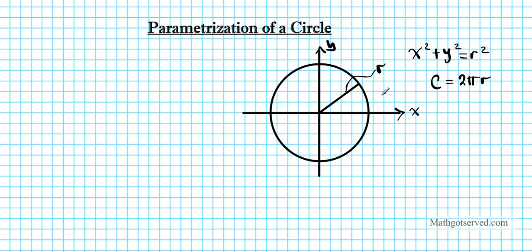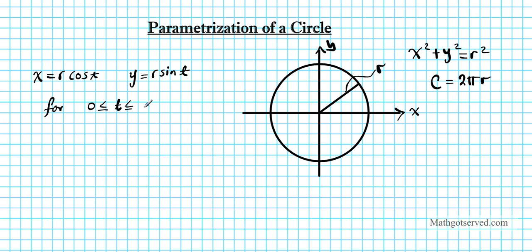The parameterization of this circle is given by x equals r cosine t and y equals r sine t, for t going from 0 to 2 pi. That 2 pi indicates a complete rotation.